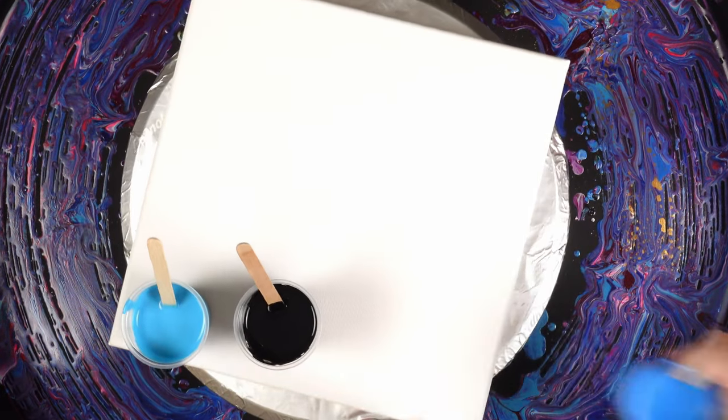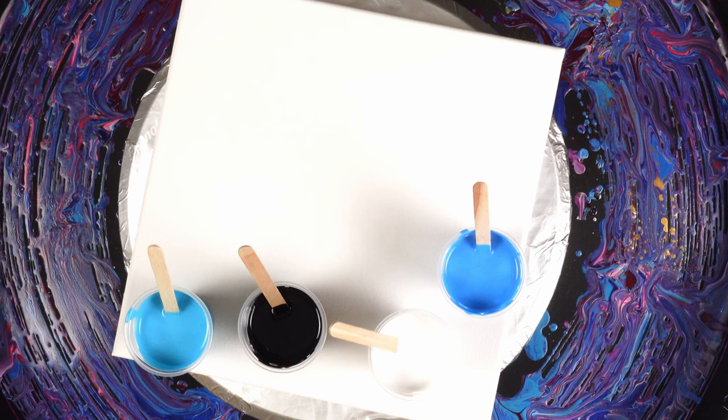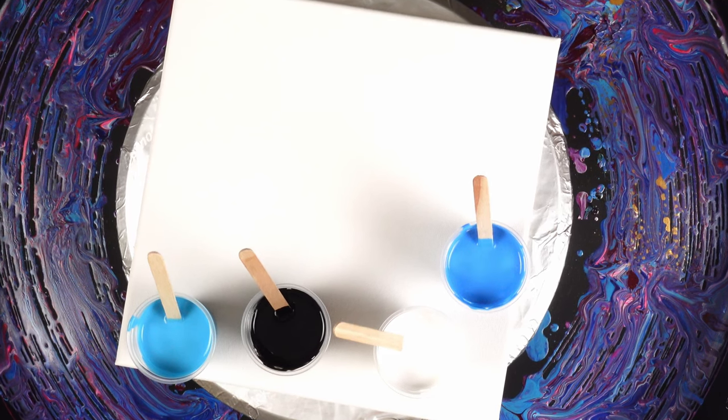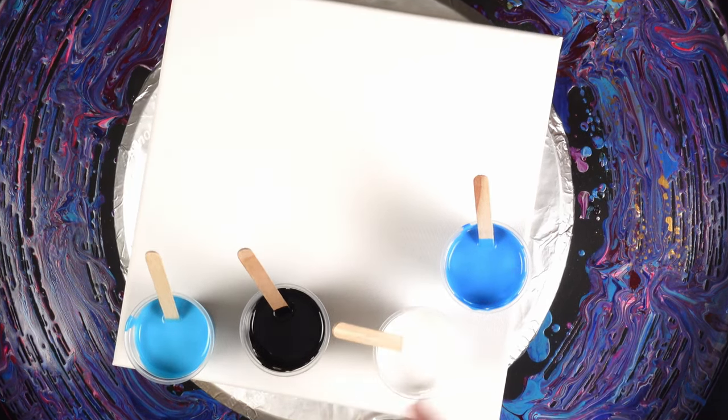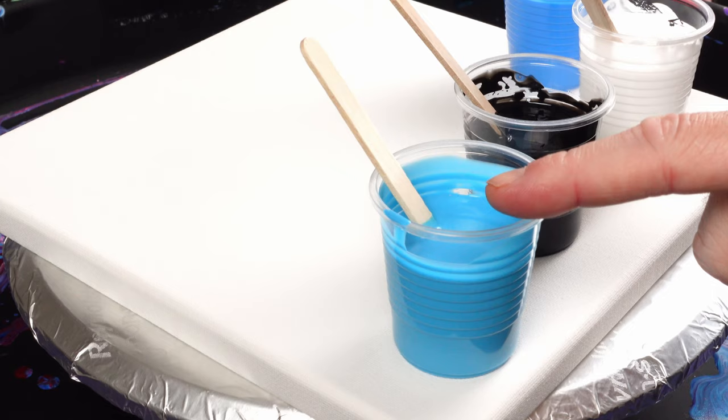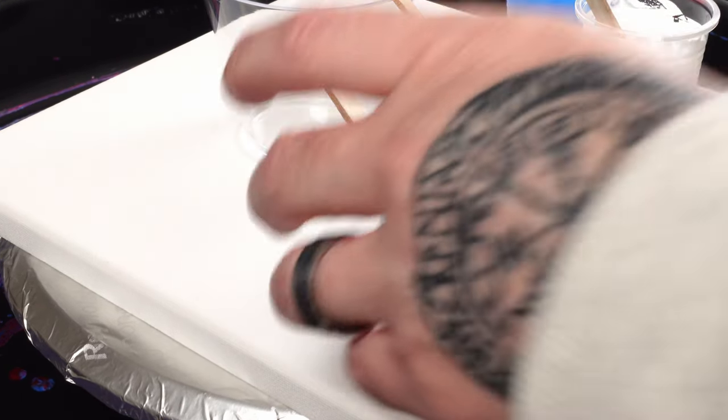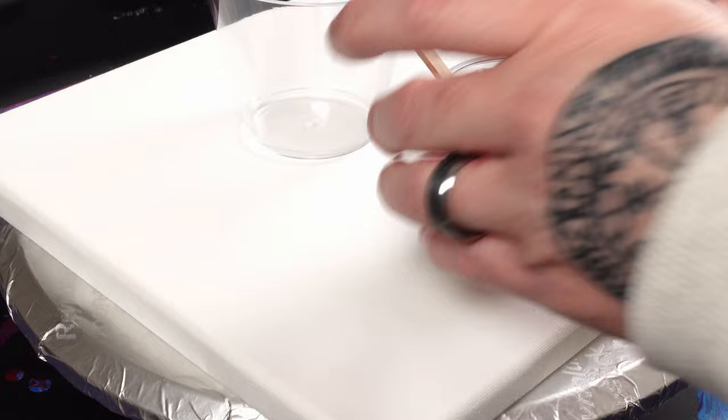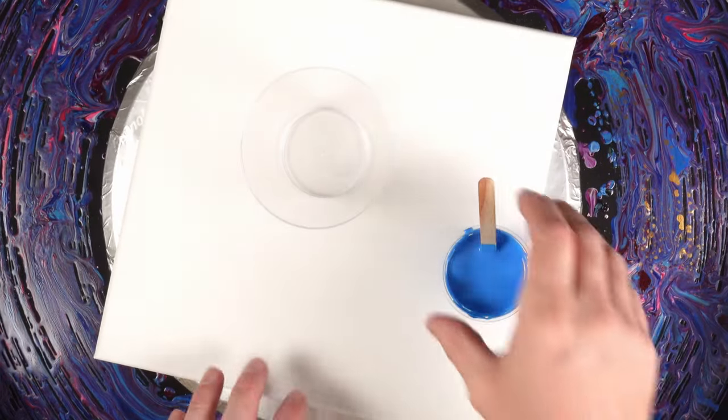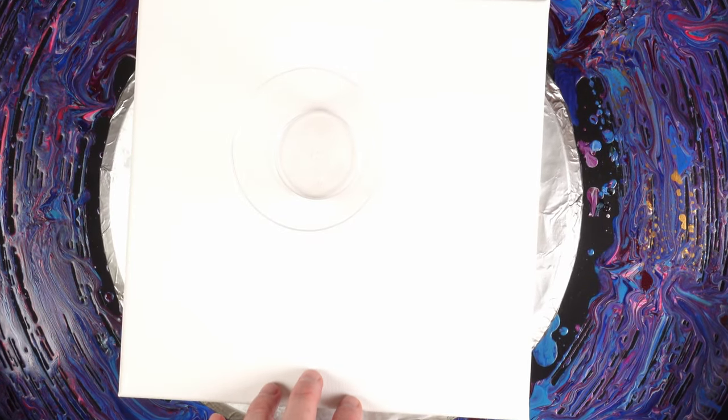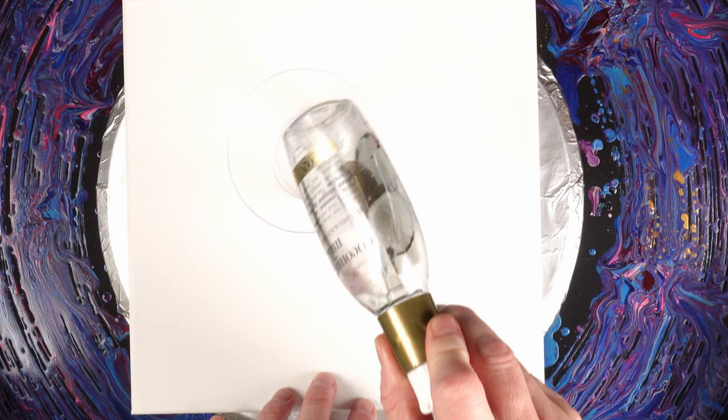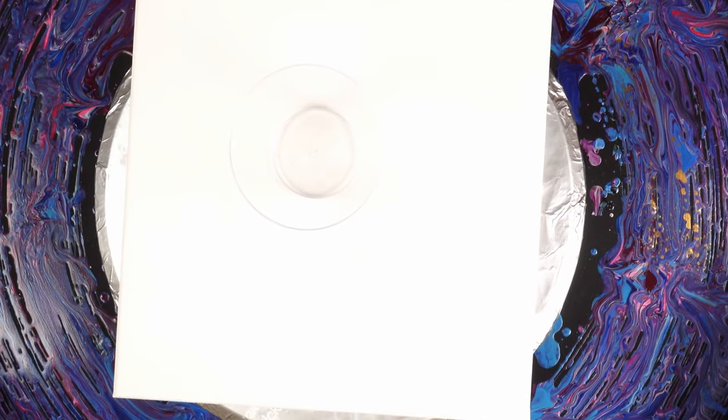What's going on you guys, welcome back to the channel. In another video today we're going to be doing a flip cup because we're still continuing to bring everything back to a basic level. The colors I'm using are titanium white, onyx black, turquoise, and cerulean blue. All the colors are mixed two parts pouring medium to one part paint. There's one to two drops of the OGX coconut milk hair serum in each color.